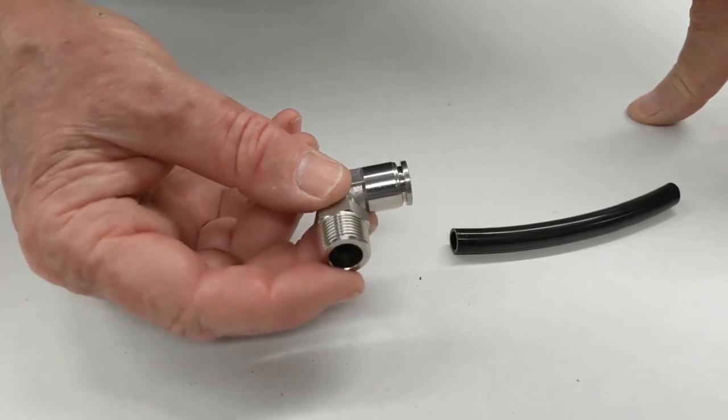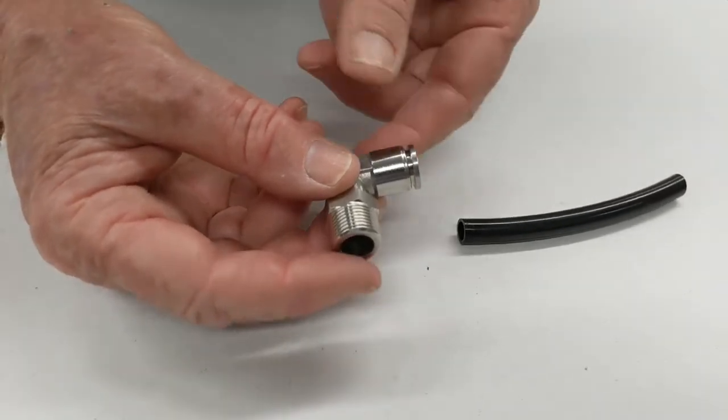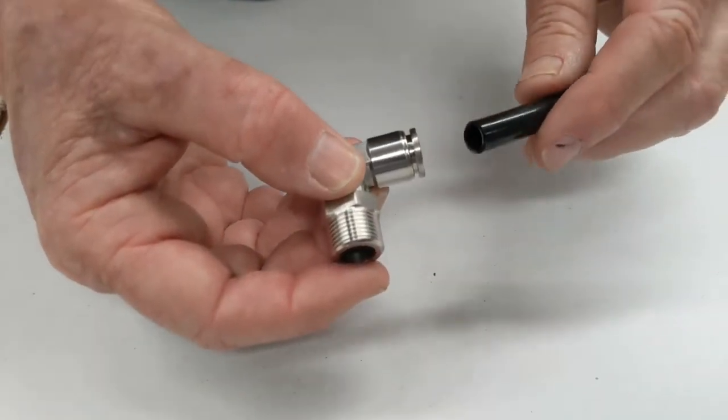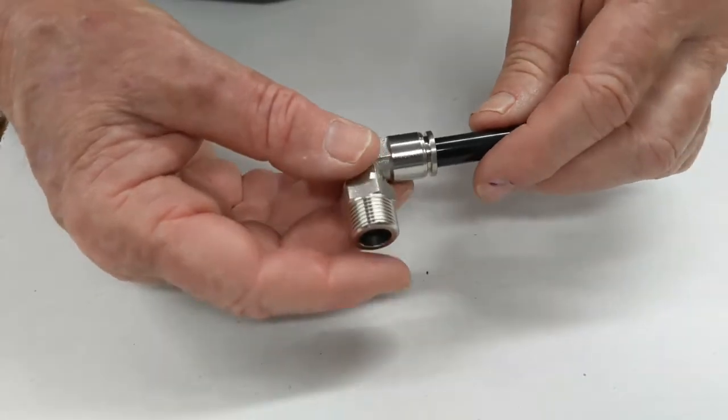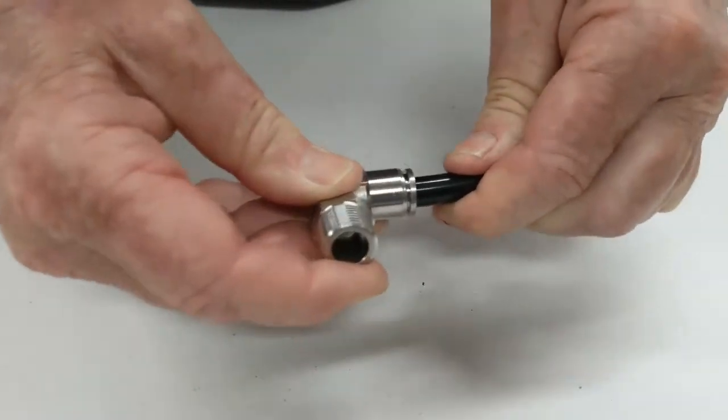How this works is that the tube is put into here, it's pushed hard, grips the actual collets grip it.